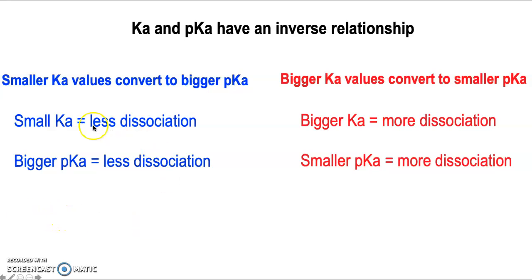So this sums it up. Small Ka means less dissociation, which means bigger the pKa, less dissociation. Whereas on the other hand, you could take the reverse argument and say big Ka values mean more dissociation. Hence, small pKa's mean more dissociation.